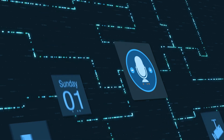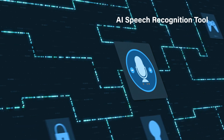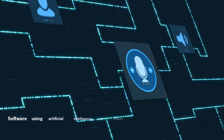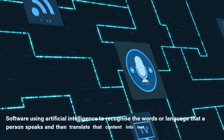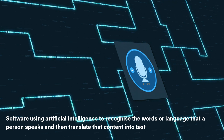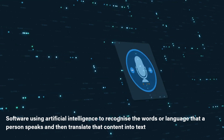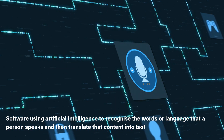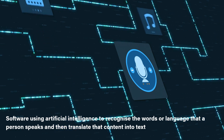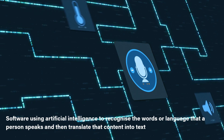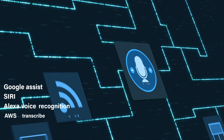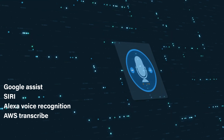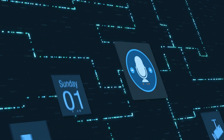The next one is AI speech recognition tools. This tool uses AI to recognize the words of a language that a person speaks and then translates them into text. It works by analyzing audio input such as spoken words and converting them into written text. AI uses algorithms and machine learning techniques to recognize and analyze spoken patterns and convert them into text. Main examples of this tool include Google Assistant, Siri, Alexa, voice recognition systems, and AWS Transcribe.